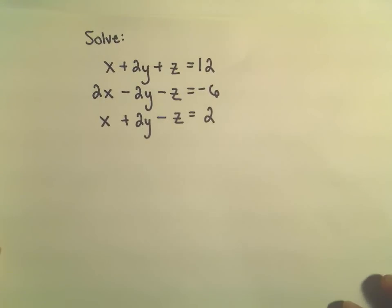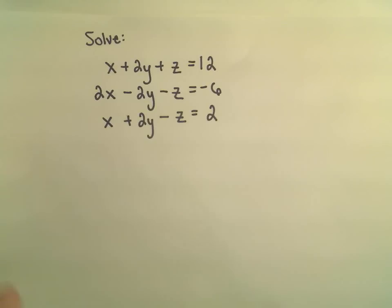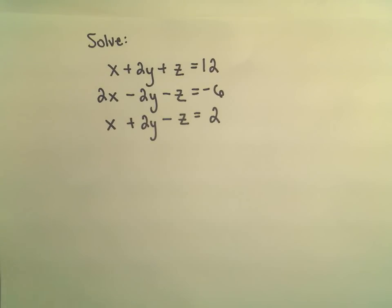So in this example, we've got the system x plus 2y plus z equals 12, 2x minus 2y minus z equals negative 6, and x plus 2y minus z equals 2.